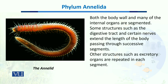Both the body wall and many of the internal organs are segmented. However, some structures like the digestive tract and certain nerves extend the entire length of the body, passing through these successive segments.